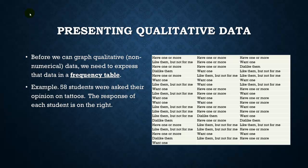Before we can graph qualitative or non-numerical data, we have to get the data in a way that makes sense. In this example, I have 58 students and I asked them what their opinions on tattoos were. I gave them four choices: do you have one or more, do you like them but it's not for you, do you want one but don't have one yet, or do you dislike them? Looking at this giant data table of 58 responses, it's really hard to get an idea other than that there were just different answers.